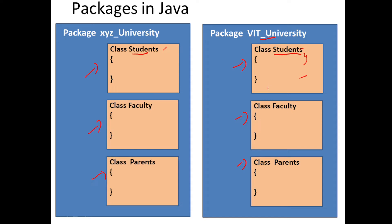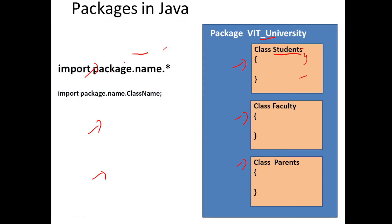So you have declared classes. Now how do you import them? How do you use classes defined inside a package? You have to use an import statement. Import the package name — for example, VIT University. When you give dot-star, you can access all the classes in your code. If you want to import just the Students class, you write: import VITUniversity.Students. Then you can create objects only for the Students class.